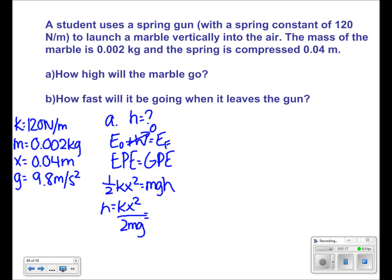Putting in our numbers, we get that height is equal to 120 times 0.04 squared over 2 times 0.002 times 9.8.